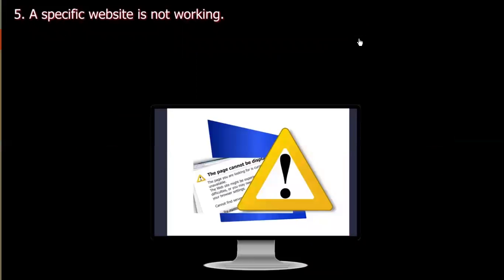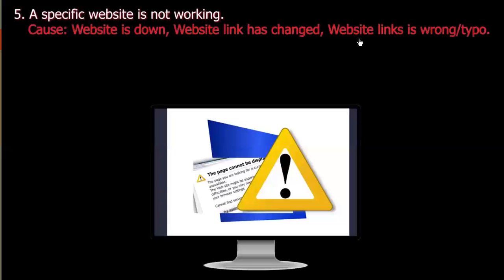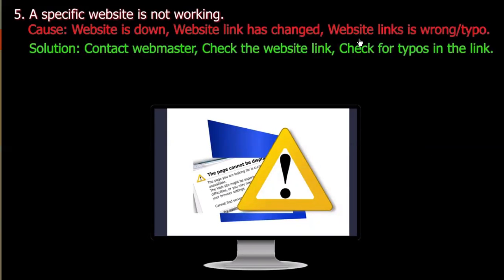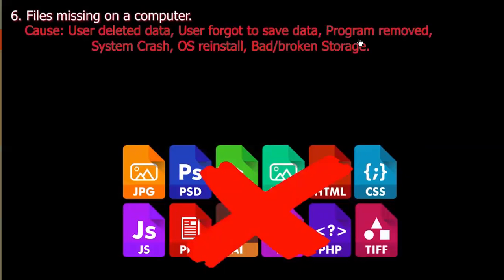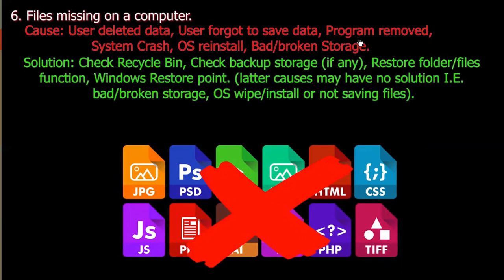Number five: A specific website is not working. Cause: Website is down, website link has changed, or website link is wrong or has a typo. Solution: Contact the webmaster, check the website link, or check for typos in the link. Number six: File missing on the computer. Cause: User deleted data, user forgot to save data, program removed, system crash, OS reinstall, or bad/broken storage. Solution: Check recycle bin, check backup storage if any, or restore folder/files using restore points. Some causes may have no solution, for example bad/broken storage, OS reinstall, or not saving files.